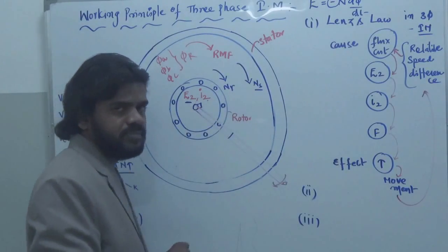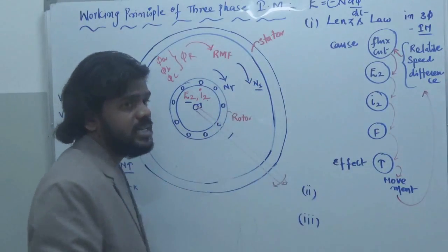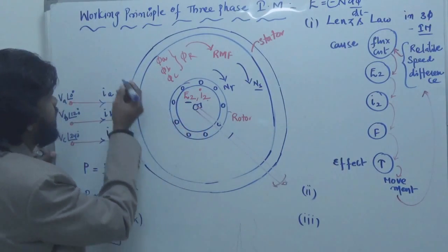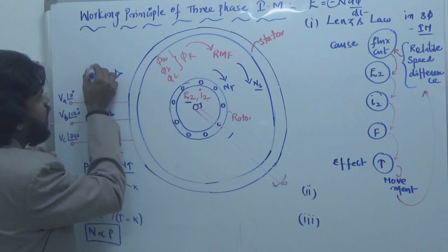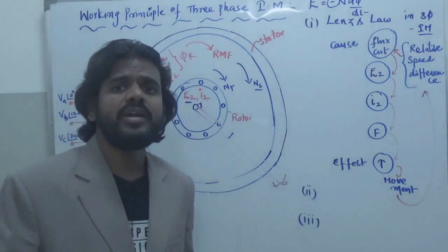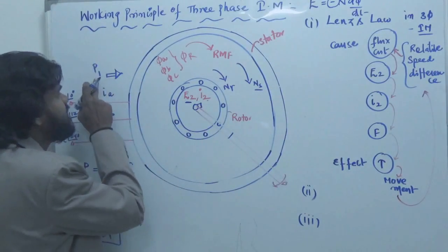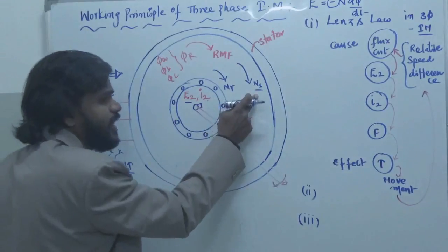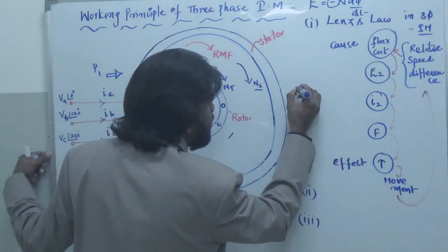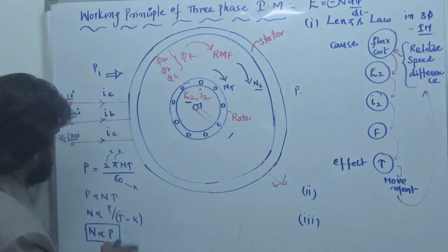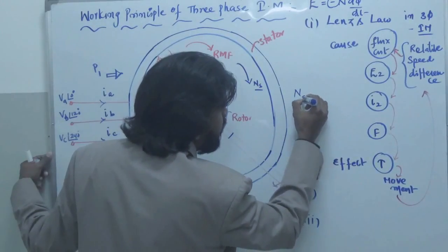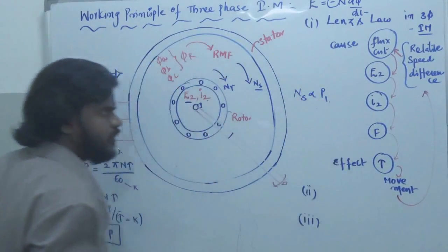We have two speeds: Ns and Nr. What is the power behind Ns and what is the power behind Nr? The power input to the motor — let's call it P1 — is specifically the power input to the stator winding. This stator winding input power is the reason for the stator flux speed. So the speed Ns is proportional to P1.